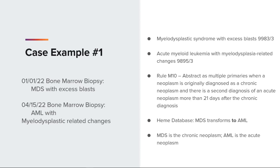Step 2 says to use the multiple primary rules to determine the number of primaries using these working histology codes. After moving through the rules we would stop at rule M10. If we wanted to confirm, we are instructed to use the database again to check the transformations to AML and transformations from section. The heme database confirms that MDS transforms to AML, meaning MDS is the chronic neoplasm while AML is the acute neoplasm, and they are diagnosed more than 21 days apart.